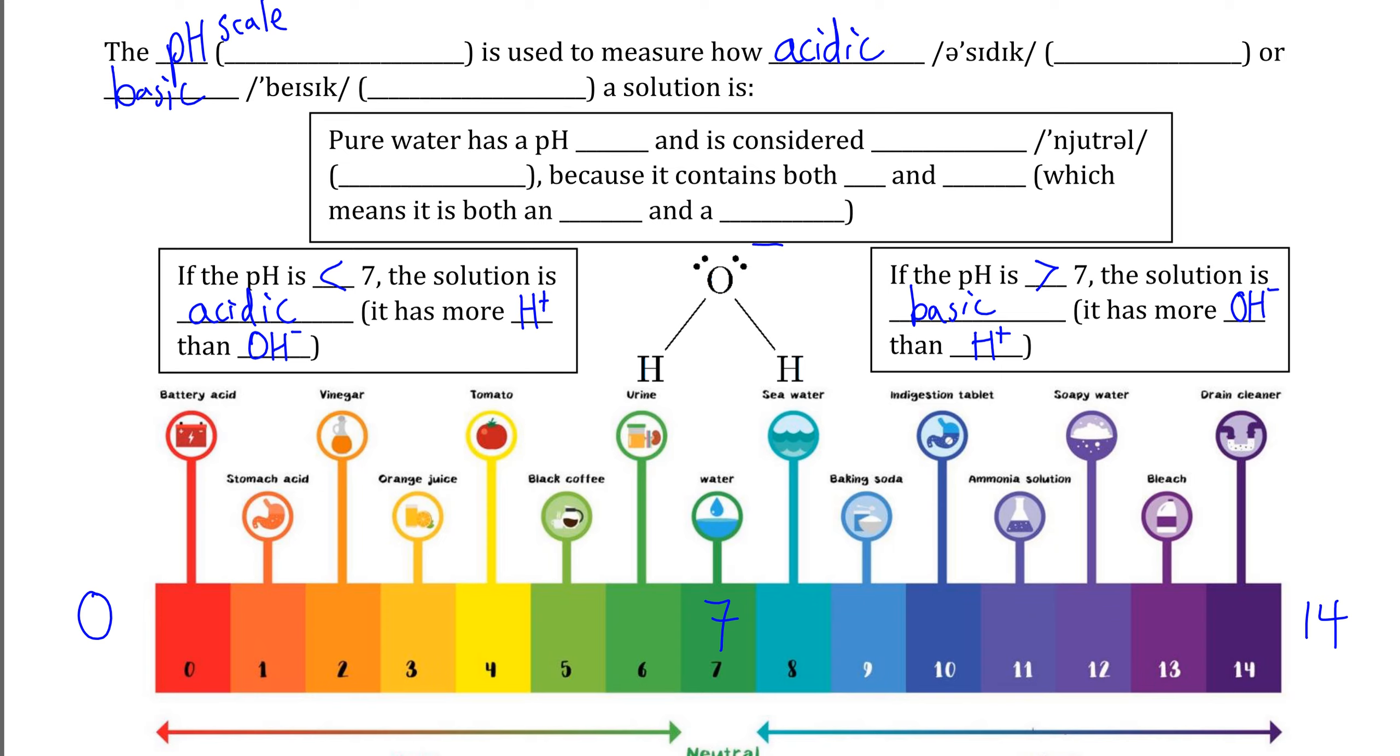This brings us to the one compound that kind of stands out here, which is water. Water is unique because as long as we have pure water, so nothing else dissolved in it, it has a pH that is exactly equal to 7. Because 7 is neither greater than 7 or less than 7, it's equal to 7, water is defined as a neutral compound.